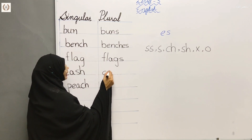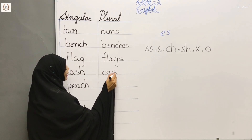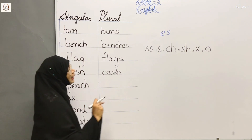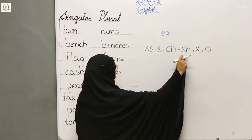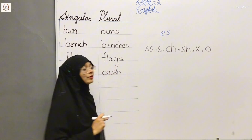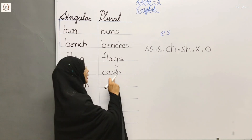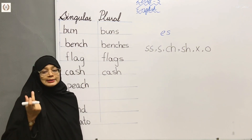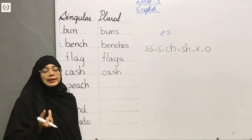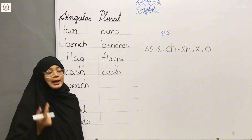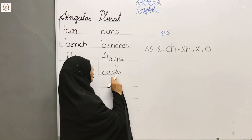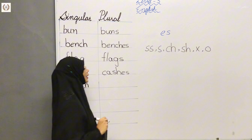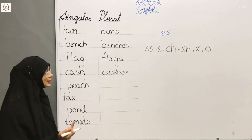C-A-S-H — Cache. Do you know what the rule is? The rule is that SH is at the end of the word, so we add ES. When a word ends in S-H, we add ES to make it plural. So Cash becomes Caches.